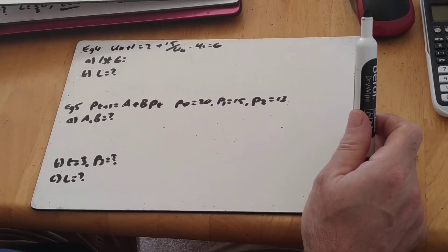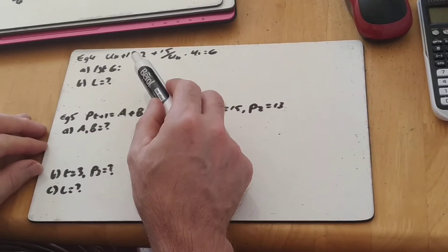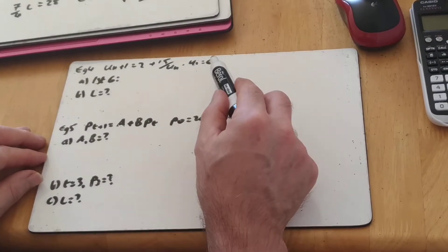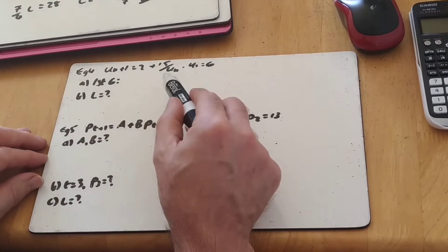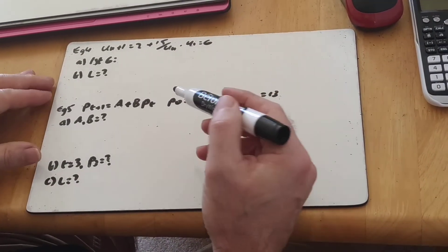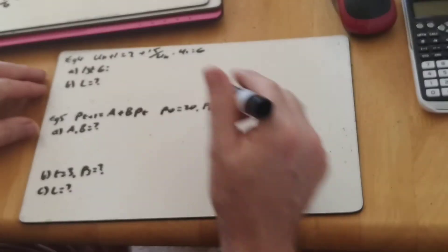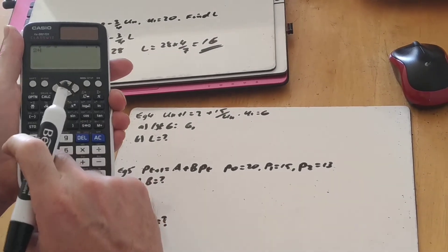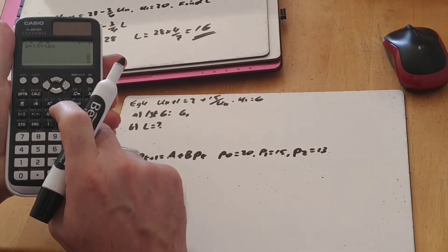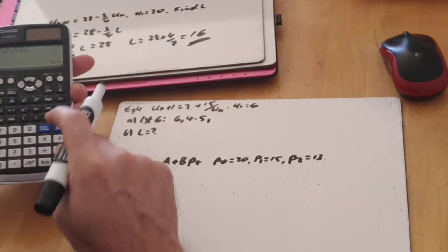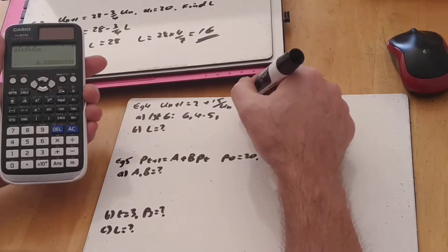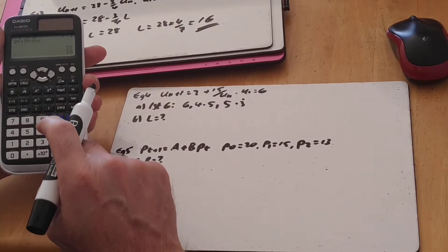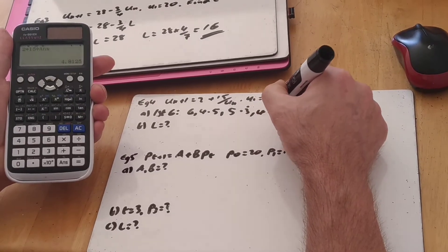Last couple of examples. We're given our inductive series. U of n plus 1 equals 2 plus 15 over u n. And U1 is 6. And it wants the first 6 and our limiting value. So it's telling us that it's going to converge. So I know the first one is 6. And as I say, because he wants the first ones, why not press 6, press equals and then do 2 plus 15 divided by ans equals. So 4.5, equals again, 5.3 recurring, equals again.